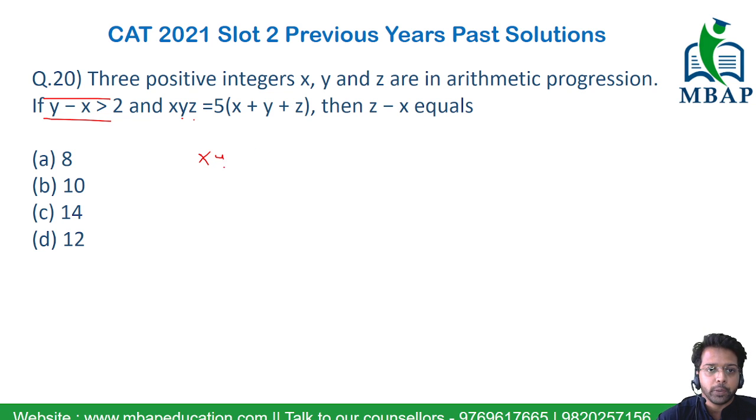Now what is being given to you? xyz is nothing but 5 times (x plus y plus z). Now if x, y and z are already in AP, x plus y plus z will be equal to 3y.